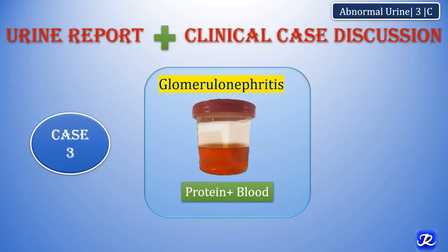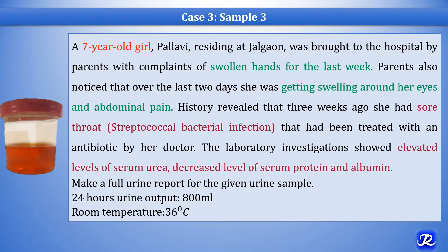Hello everyone. Now let's discuss urine report in a pathological state of glomerulonephritis. This is the third clinical case scenario, along with the sample that will be given to you.